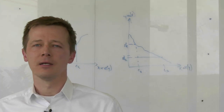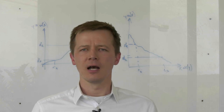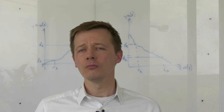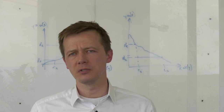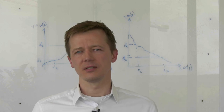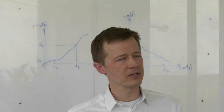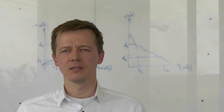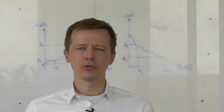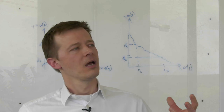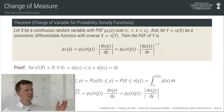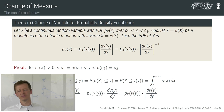Probability density functions are the objects we'll use almost exclusively when operating with probabilities, because most variables we care about are continuous. Thankfully the sum rule, product rule, and Bayes' theorem all apply to PDFs, making them quite natural to use. There is, however, one caveat: because PDFs are constructed indirectly by taking the derivative of the CDF, they transform non-trivially under variable changes.